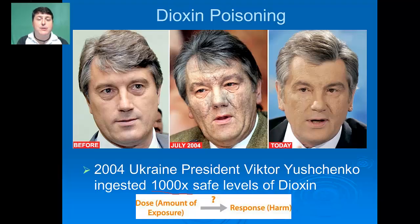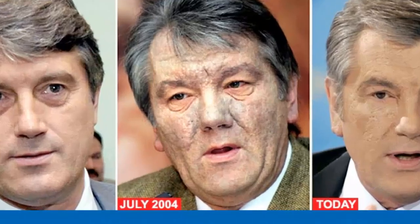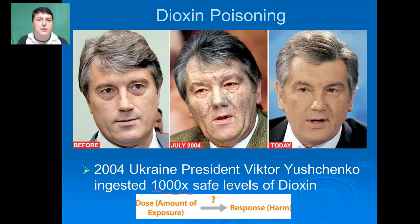Dioxins are a class of chemical contaminants formed during combustion processes such as waste incineration, forest fires, backyard trash burning, as well as some industrial processes. Humans are primarily exposed to dioxin by eating contaminated food. The dioxin will accumulate in fatty tissues where it may persist for months or years. People exposed to high levels develop chloracne, a skin disease marked by severe acne-like pimples. Studies have shown that chemical workers exposed to high levels of dioxin have an increased risk of cancer.